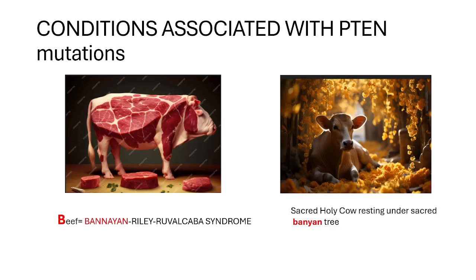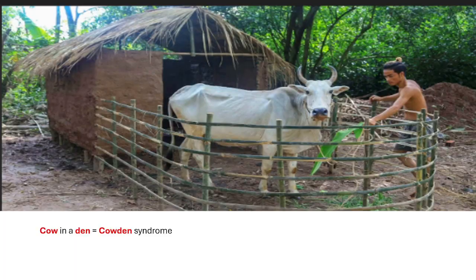Since Cowden Syndrome is one of the conditions caused by PTEN mutation, let's relate other conditions with our cow as well. Cow gives us beef, but in South Asian countries like Nepal and India, cows are considered holy animals and eating beef is forbidden. So these sacred cows rest under the sacred banyan tree. The 'B' in beef and banyan tree relates to Bannayan-Riley-Ruvalcaba Syndrome. The second condition is obvious — cow in a den: Cowden Syndrome.